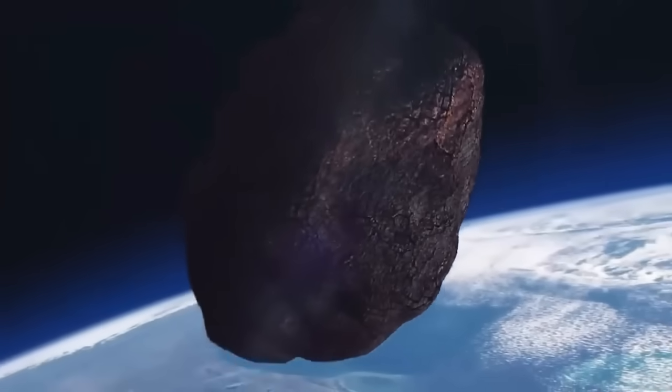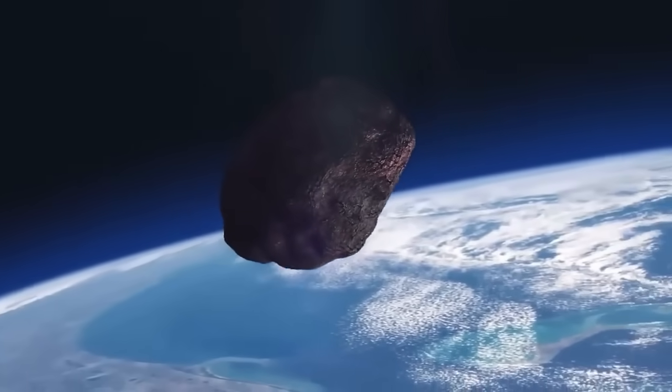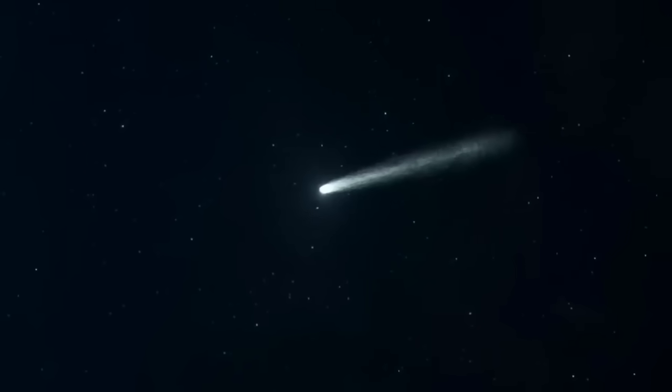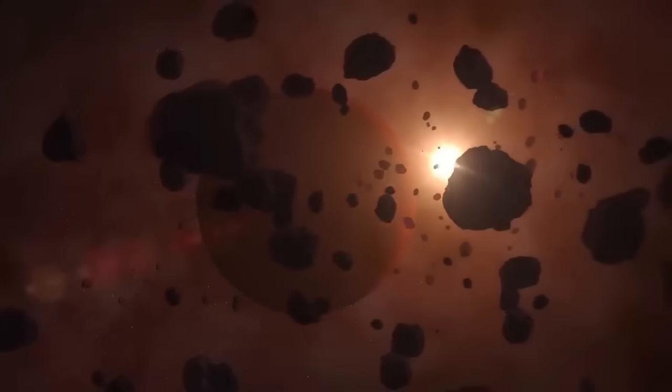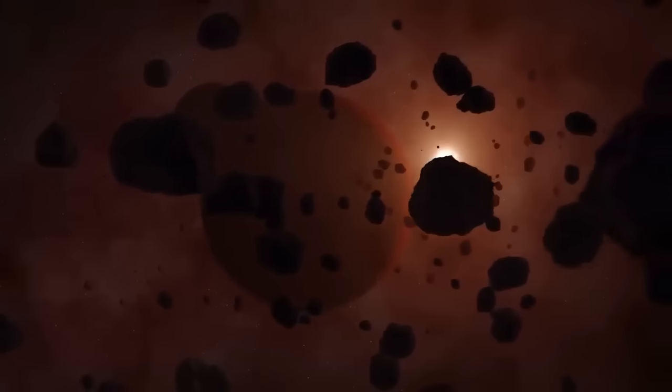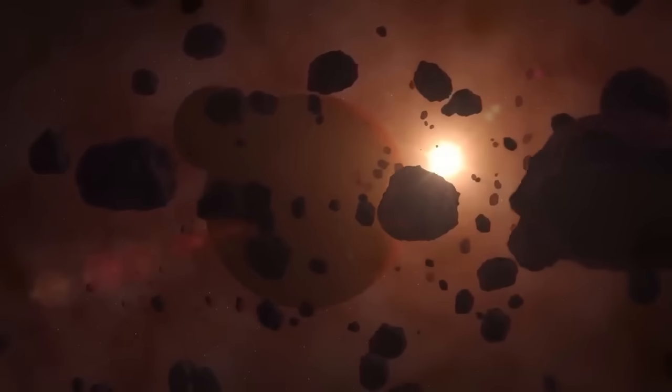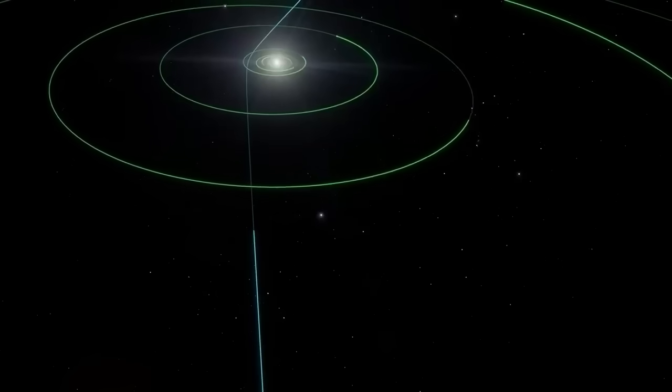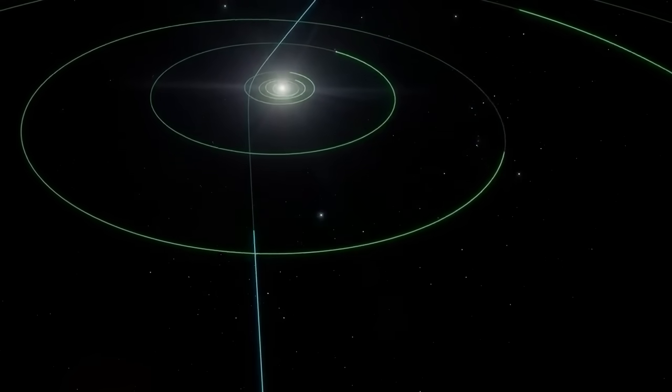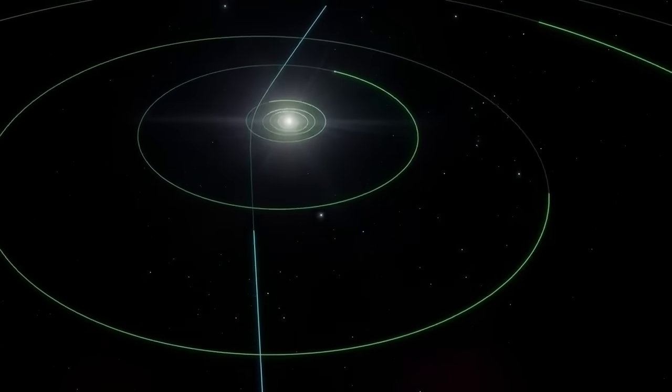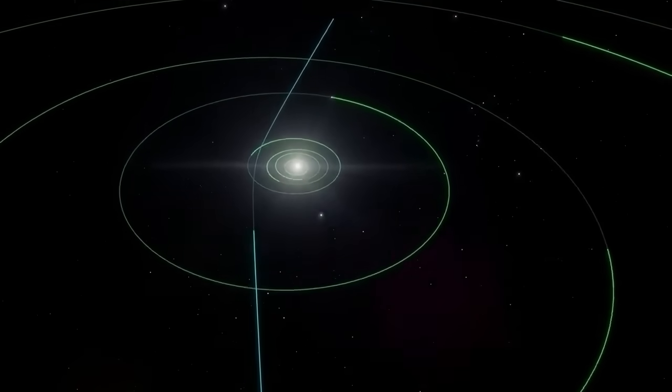The sheer scale of this phenomenon is hard to grasp. Comet 3I Atlas itself is estimated to be several miles across. But its nine companions? Their size and composition remain a mystery, masked by their inexplicable darkness. Yet their energy signature, the 20 gigawatts of power from each, speaks volumes. This is not a passive journey, it's an active presence.